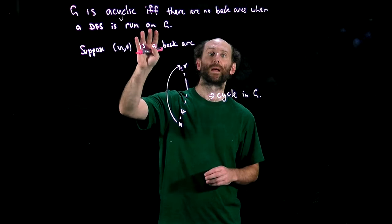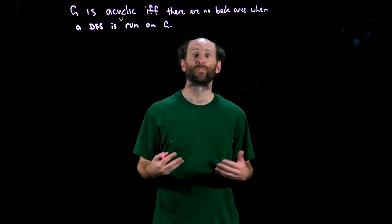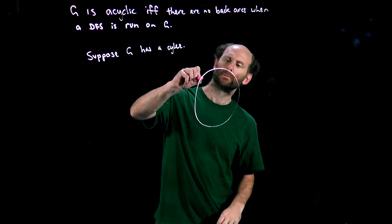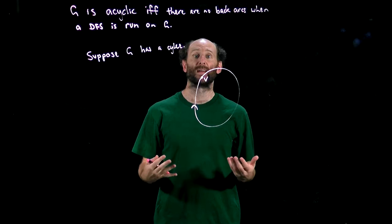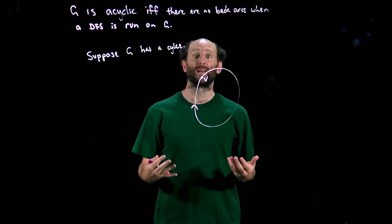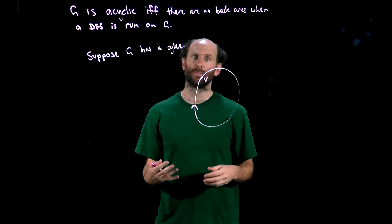How about the other direction? Suppose we have some cycle in G. Let's say the cycle looks like this, it goes that way, and during our search the first node we encounter on that cycle is v. Then clearly everything in the cycle is on the same search tree as v, and indeed everything in that cycle will be a descendant of v in that search tree.